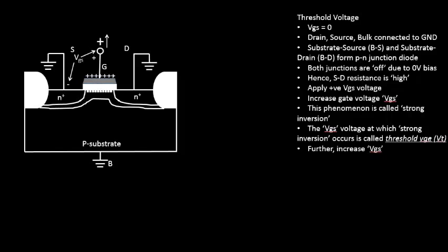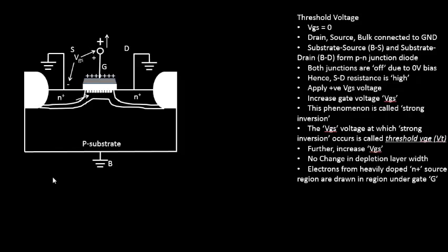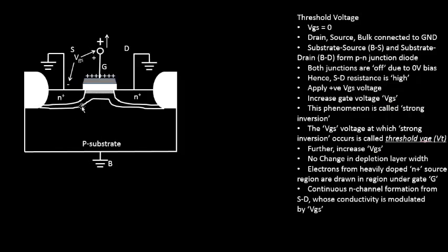The answer is the heavily doped N-plus regions. These become the source of electron supply. When the gate plate becomes positively charged, it attracts negatively charged particles from the N-plus areas. If you increase the gate voltage, these electrons go and sit under the gate. There is no change in the depletion layer width since it's already fully depleted. Instead, N-plus electrons accumulate under the gate, and the channel area grows — eventually forming a continuous N-channel between source and drain.